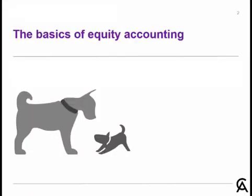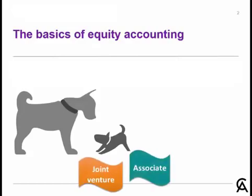For an understanding of the basics of equity accounting, it's best if you go back to the unit overview video for a discussion of the basics. From that video, which you may have already seen, you might remember that we're looking at an investor and their interest in the other entity is either a joint venture or an associate. Whether it's either a joint venture or an associate, we're pushed into IAS 28 to apply the equity method of accounting.